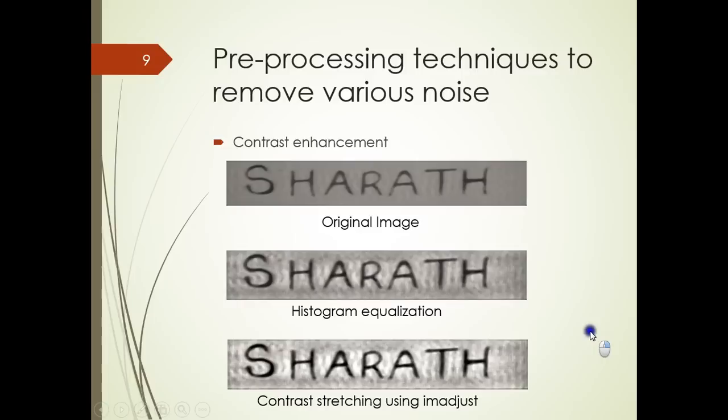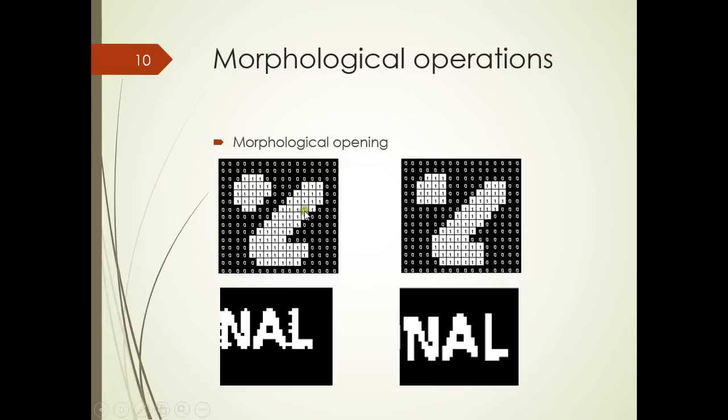Morphological opening operation with a threshold value of 3: we can see how the image is being transformed. We can check at a specific pixel — this pixel is being removed because there are more than 3 pixels around it with value 0. Similarly, other pixels are removed. This is how the morphological operation works.